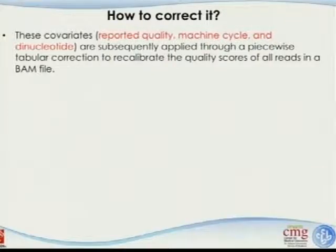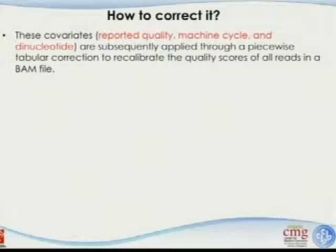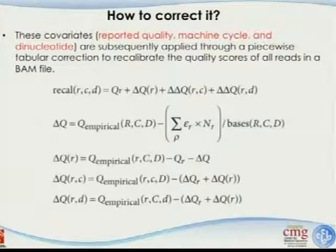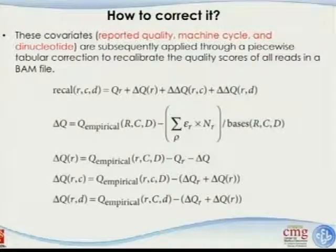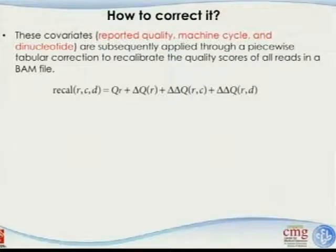The covariates — reported quality, machine cycle, and dinucleotides — are subsequently applied through a piecewise tabular correction to recalibrate the quality score of bases in the BAM file. For Illumina HiSeq 2000, reported quality is over-optimistic across all positions and for most nucleotides, so it needs to be corrected.